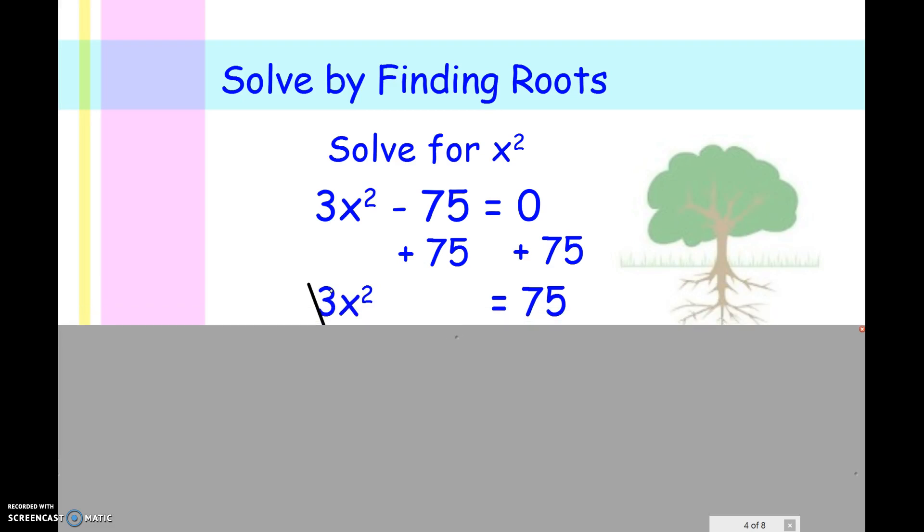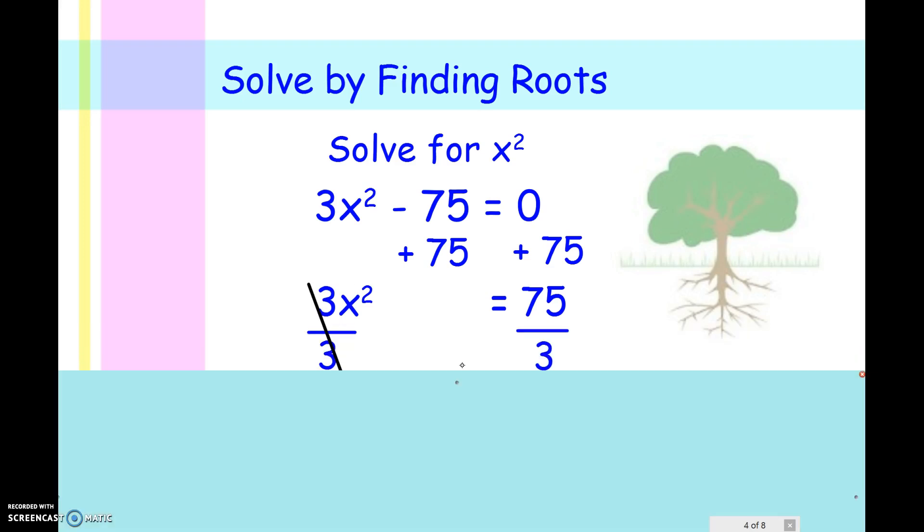Now since we want to get x by itself, our next step is to divide by 3, which will leave us with x squared equals 25. And since we have to get the x squared by itself, I need to take the square root. So if I take the square root of both sides, this will cancel out my square, which will leave me with just an x.